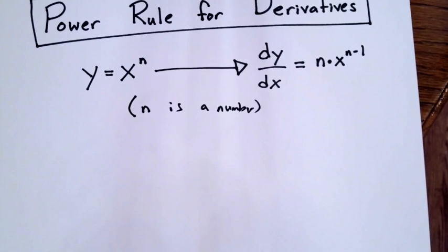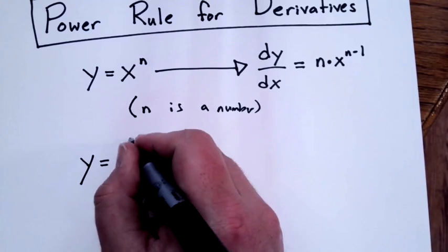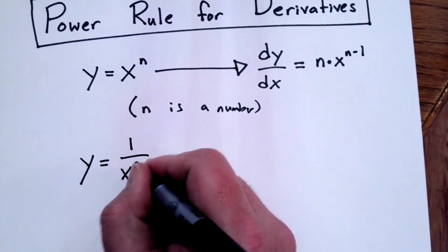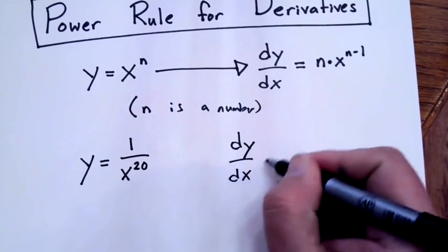There are lots of times where the power rule for derivatives can be applied, but it's not immediately obvious. For instance, suppose we have y equals 1 over x to the 20, and we're asked to find dy/dx.